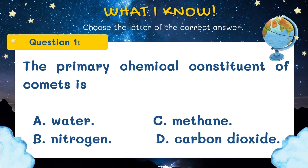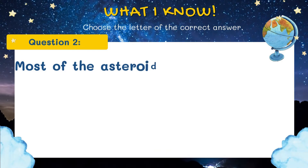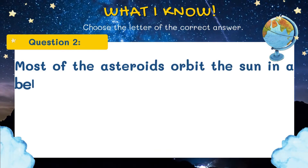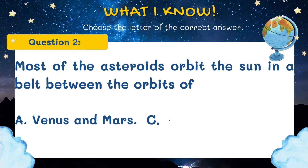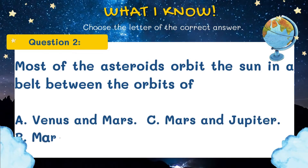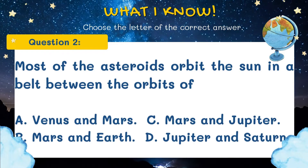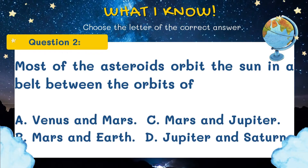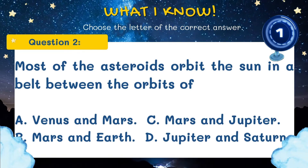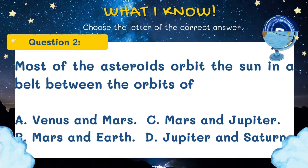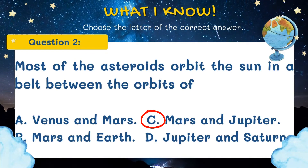And the answer is letter A, Water. Question number two: Most of the asteroids orbit the Sun in a belt between the orbits of A. Venus and Mars, B. Mars and Earth, C. Mars and Jupiter, or D. Jupiter and Saturn. And the answer is letter C, Mars and Jupiter.